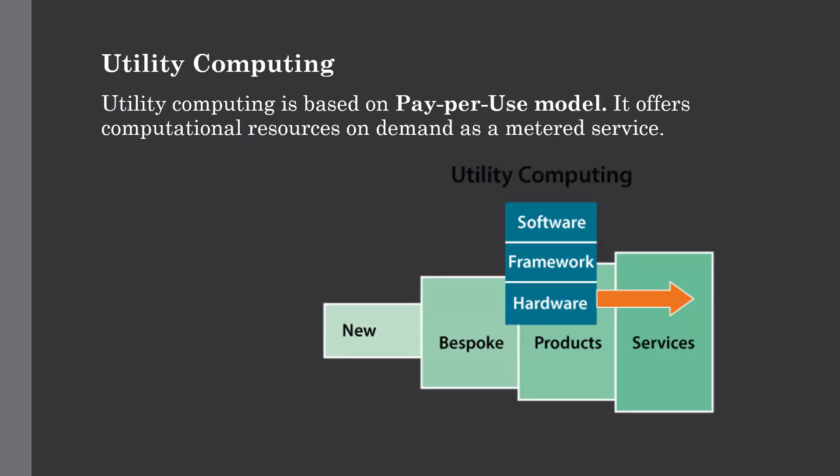The last technology is utility computing. Utility computing is based on a pay-per-use model — it offers computational resources on demand as a metered service. Cloud computing, grid computing, and managed IT services are all based on the concept of utility computing. Utility computing means you pay according to your usage of computing power as well as storage from cloud vendors, in order to reduce IT costs for implementing cloud computing services in your organization.